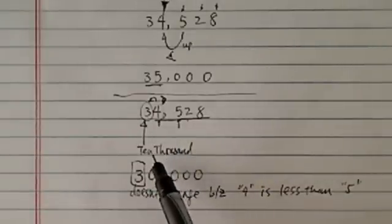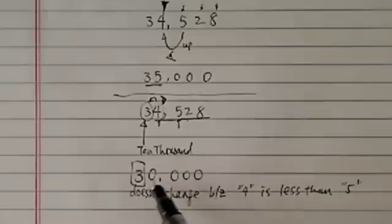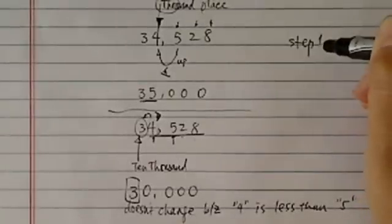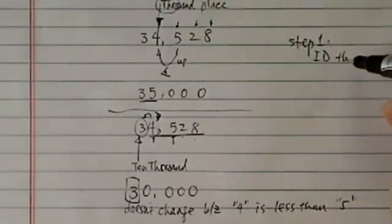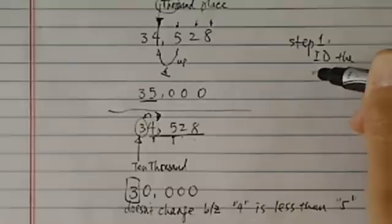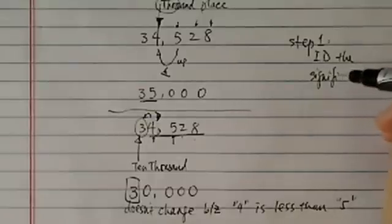So to the nearest ten thousand place, we have 30,000. So once again, let's take a quick review. Step one: identify the significant digit.